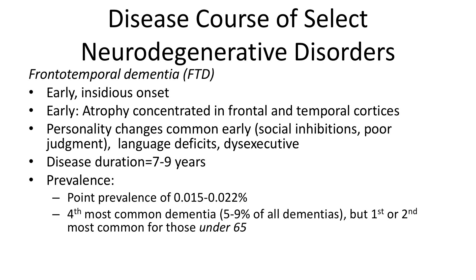Frontotemporal dementia has an early, insidious onset. Early on, atrophy is concentrated in the frontal and temporal cortices, while parietal and occipital lobes have been shown to be spared. Research also suggests cortical atrophy can occur asymmetrically. The extent of hippocampal and amygdala involvement varies from person to person. Personality changes, social disinhibition, poor judgment, language deficits, and executive dysfunction are common. Disease duration ranges from about 7 to 9 years. The prevalence is about 0.015 to 0.022%. It is the fourth most common dementia overall at 5 to 9% of all dementias, but notably is the first or second most common for those under 65 — again highlighting the importance of age of onset in differential diagnosis.